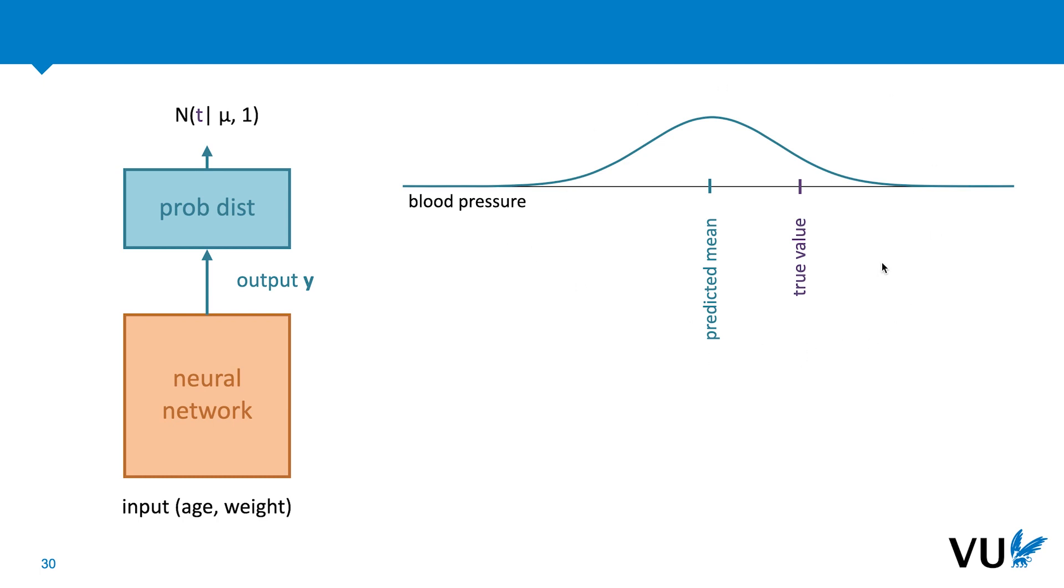That gives us this picture. We are given a true value, which stays in place, and our job is to move the predicted mean around so that the probability density of the true value is as high as we can make it. As you can see, the best we can do is to put the predicted mean exactly on the true value. We move the mean by changing the weights of our neural network. Of course, for every instance we see, t will be in a new place, so the weights should give us a new mean for every input x we see.